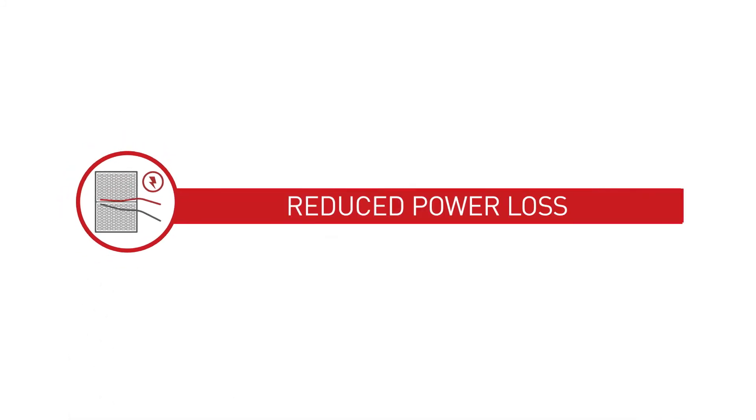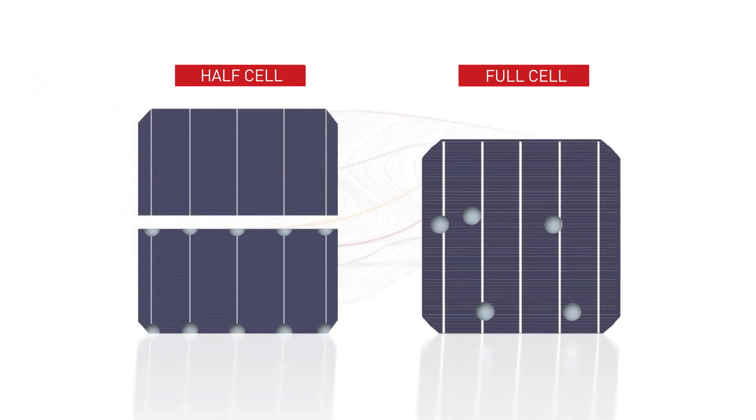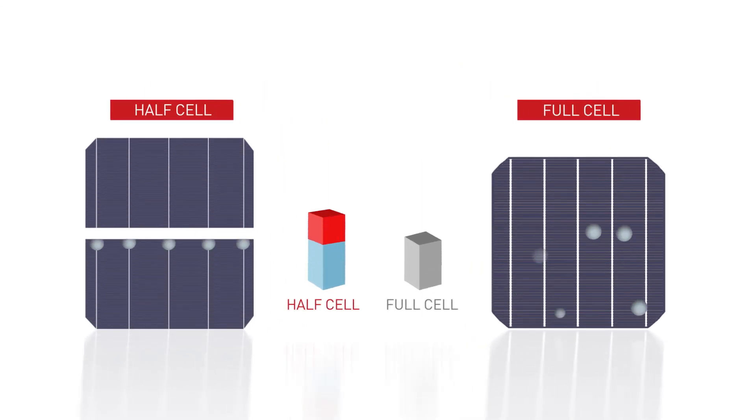Reduced power loss. Half-cell technology reduces resistive losses in the interconnections of solar modules. Less resistance between the cells increases the power output of a module.